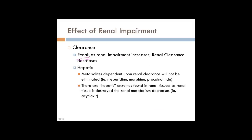Regarding clearance, obviously if a drug is renally cleared, you're going to see a decrease in renal impairment. But what about hepatic clearance? As drugs are cleared by the liver, they're being changed into a metabolite — they don't just go away. Often these metabolites are dependent upon renal clearance, so if there's a decrease in renal function they may not be eliminated. The metabolites of meperidine, morphine, and procainamide are all cleared renally, and therefore if they have activity or toxicity, you're going to have a problem.